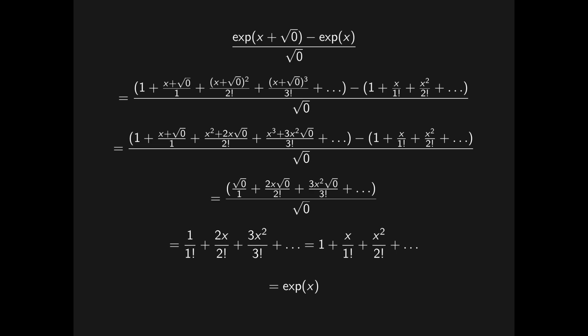Note that there are some finer points we are ignoring here, such as how division by the square root of zero only works in certain cases, and that x must be a real number. From now on, since square root of zero is a little long, let's call this number epsilon.